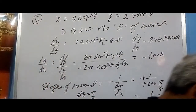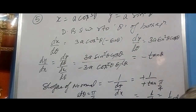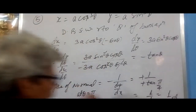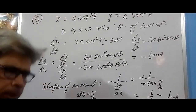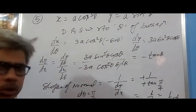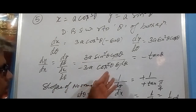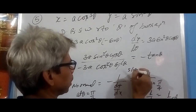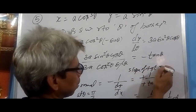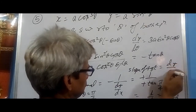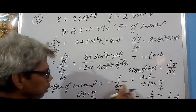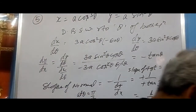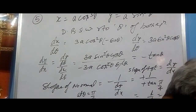Question 6 is the same pattern: find dx/dt, dy/dt, then dy/dx. If the equation of tangent is asked, use dy/dx directly. If the equation of normal is asked, use -1/(dy/dx). Slope of tangent = dy/dx, and slope of normal = -1/(dy/dx). This is the core concept for these questions.